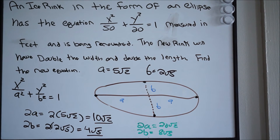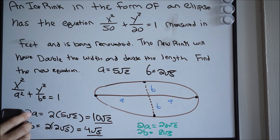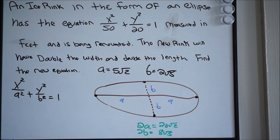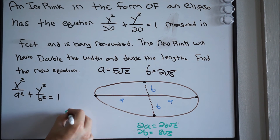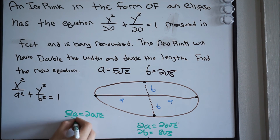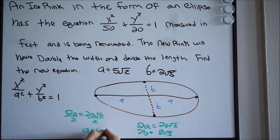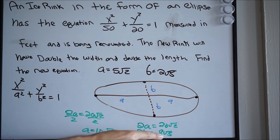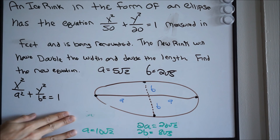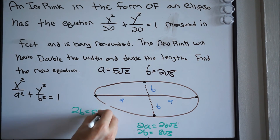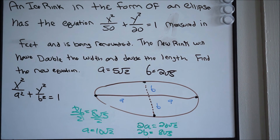We can now put this final information into our equation, but first let's solve for a and b individually. For a: 2a equals 20 square root of 2, so dividing both sides by 2 gives a equals 10 square root of 2. For b: 2b equals 8 square root of 5, so dividing both sides by 2 gives b equals 4 square root of 5.